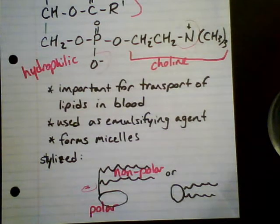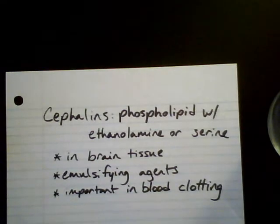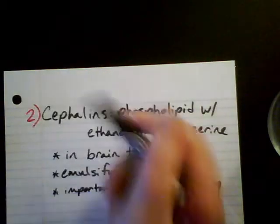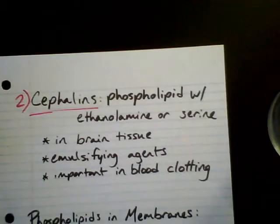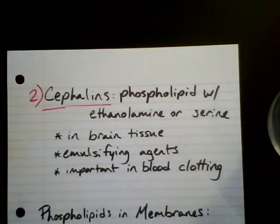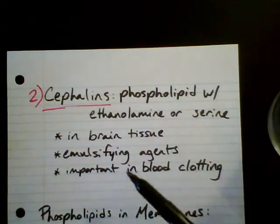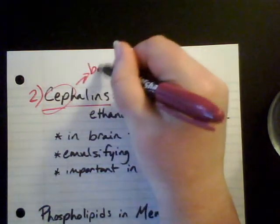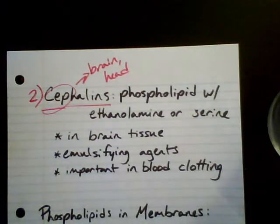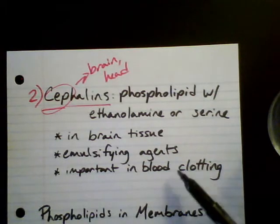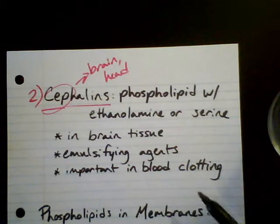Lecithins are specifically the ones with choline. There's another class of phospholipids called cephalins. The prefix 'ceph' should make you think of your head - cephalic, anything to do with your head or brain. Cephalins are phospholipids with either ethanolamine or serine - the other two amino alcohols. Because of this prefix indicating brain or head, these occur mostly in brain tissue and are important for our nervous system. They're also used as emulsifying agents and are important in blood clotting.